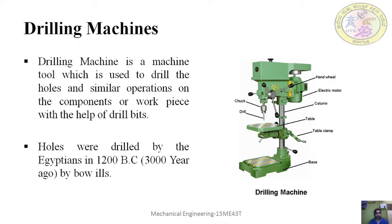Holes were first drilled by Egyptians in the year 1200 BC, around 3000 years ago, by means of bow drills — that is, the sharp edge of arrows and bows used to perform drilling operations. Later, development led to the modern drilling machine. The drilling machine mainly consists of the following parts: the table, which holds the workpiece, the drill bit, which produces the drilling operation, and the chuck, which holds the drill bit.